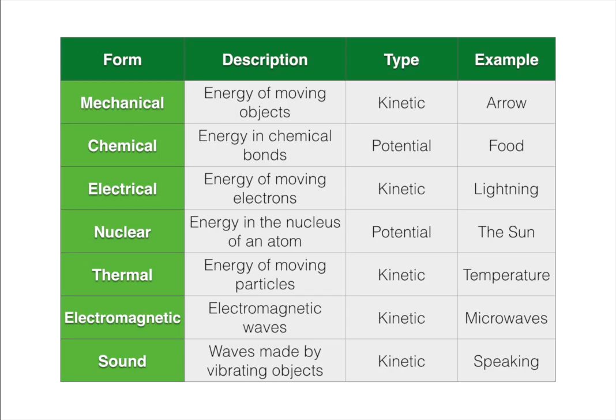Those are the different forms of energy. There are seven types: mechanical energy — moving objects; chemical energy — energy stored in chemical bonds; electrical energy — moving electrons; nuclear energy — energy stored in the nucleus of an atom; thermal energy — heat, or particles bouncing into each other increasing their kinetic energy; and electromagnetic energy and sound energy — energy created by waves. In our class, we're going to be doing some labs where we look at how energy transfers from one form to another, but it's important to know these definitions and examples. That's your lesson — hope you enjoyed it, and if you have any questions please let me know. Thanks for watching.